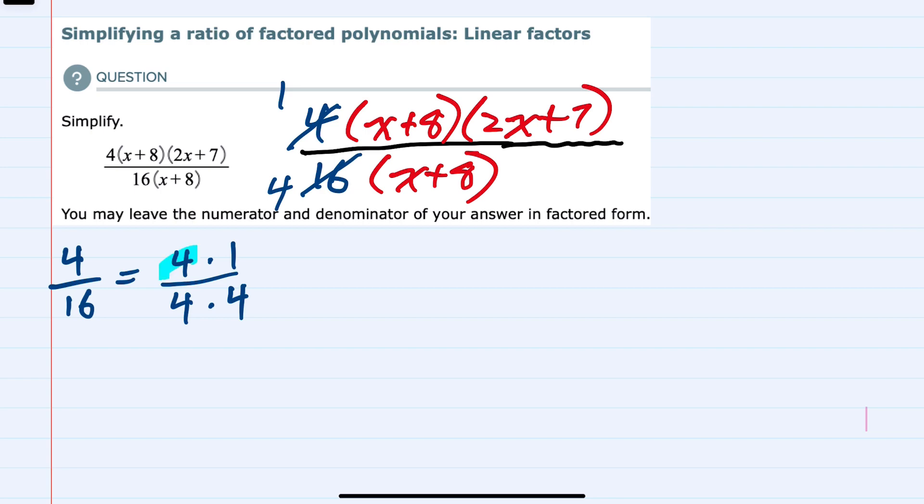And this 4 over 4 is 1, so this simplifies to 1 times 1 fourth, so we get 1 fourth.